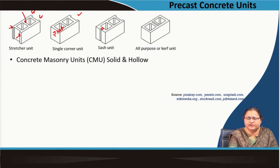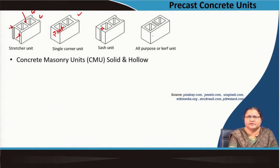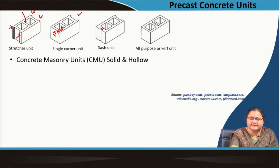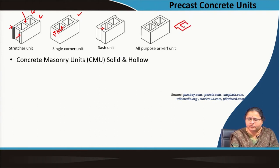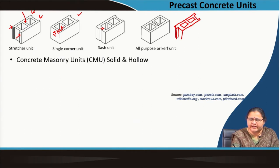There is a corner unit where the projection is on one end and the other side is flat. In another unit you see a very thin groove cut which is to receive a glass piece — that is a sash. So you can receive a glass piece through it. There is also an all-purpose brick where the vertical faces are flat, which helps in interlocking. There are also jam units where one edge will have a specific profile and hollows.